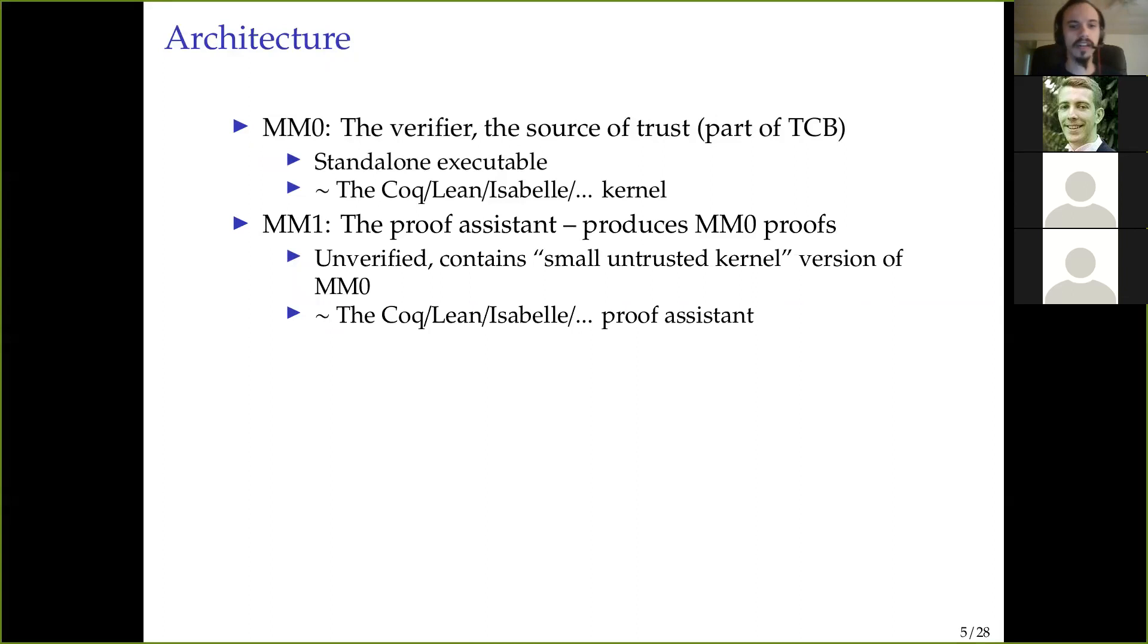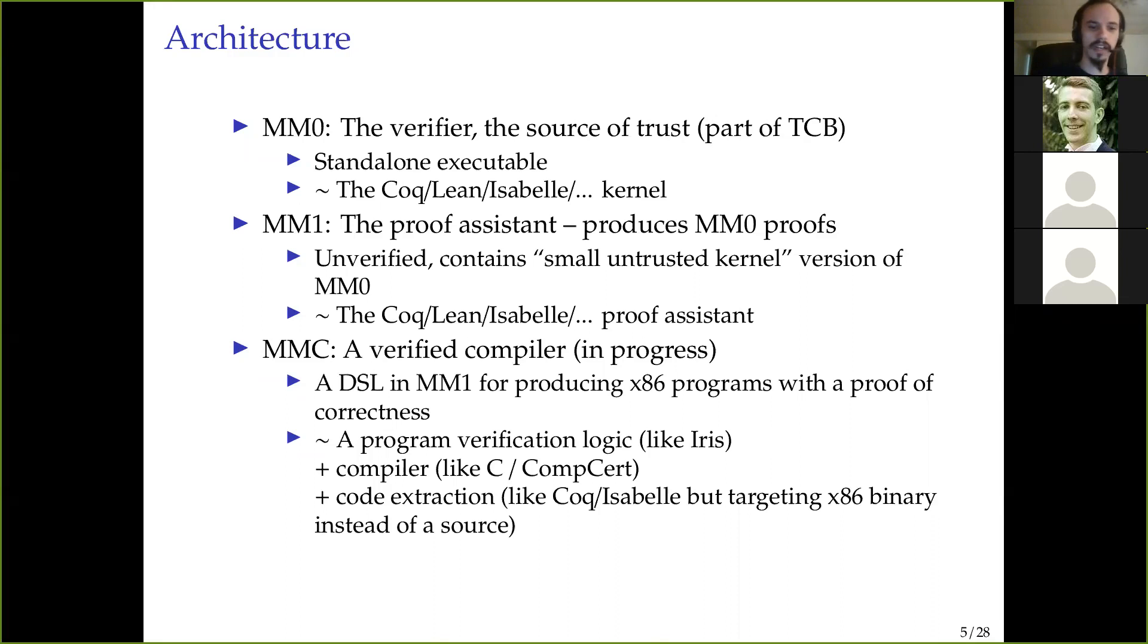The first component is MM0. That's the actual verifier. That's what I was calling v before. You can think of this as the kernel of your favorite proof assistant, except that this one is a standalone executable. MM0, and it is a part of the trusted code base here.